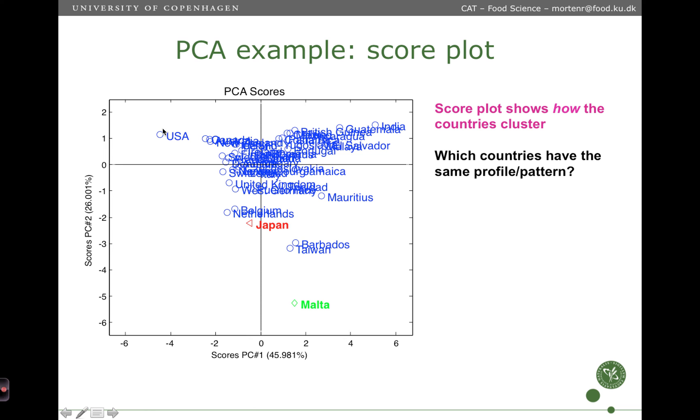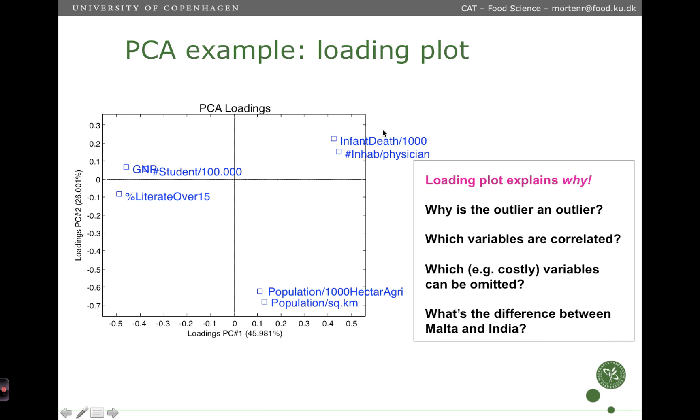And what we get out of it is this score plot. And this score plot is the multivariate distribution of the sample. And that might sound fancy. But what it is, is that two samples positioned close to each other are alike. And samples, countries in this case, that are positioned far away from each other are disalike. So if we should answer the question, which country in Europe is most similar to Japan, it would be the Netherlands or Belgium. And which countries are most dissimilar to Malta, it would be the US or India.